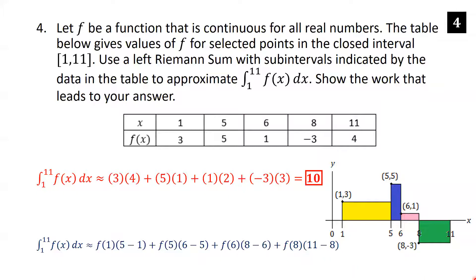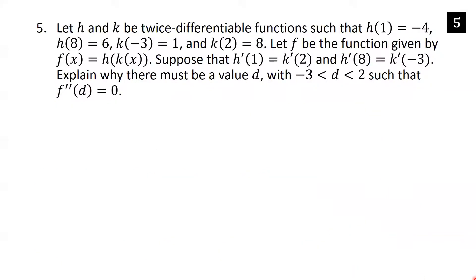Let h and k be twice differentiable functions with h(1) = -4, h(8) = 6, k(-3) = 1, k(2) = 8. Let f(x) = h(k(x)). Suppose h'(1) = k'(2) and h'(8) = k'(-3). Explain why there must be a value d, with d between -3 and 2, such that f''(d) = 0.